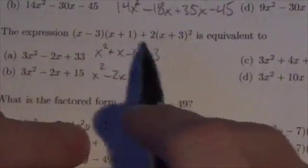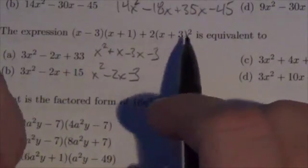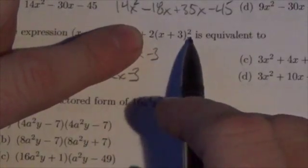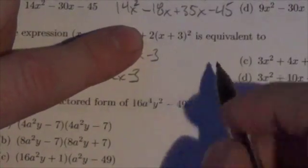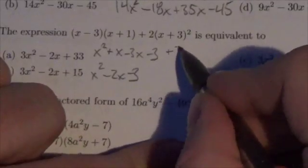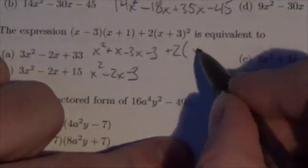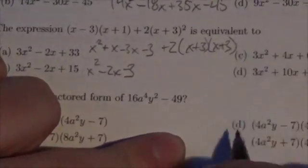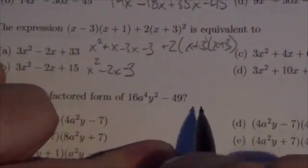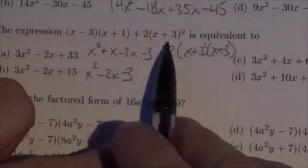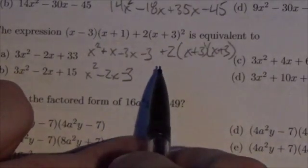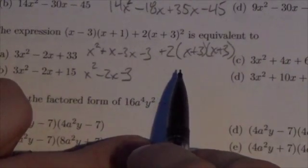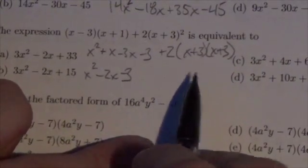Now when we expand this one out, we're going to have to do the exponent prior to doing that 2 there, the coefficient, because in order of operations we do exponents first. I'm going to write it out like this because I don't want to make a very predictable mistake. x plus 3 squared is not, no matter how badly anybody wants it to be, not x² plus 9. It just isn't.